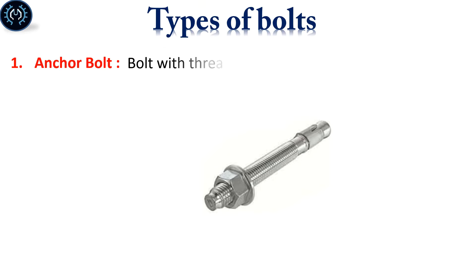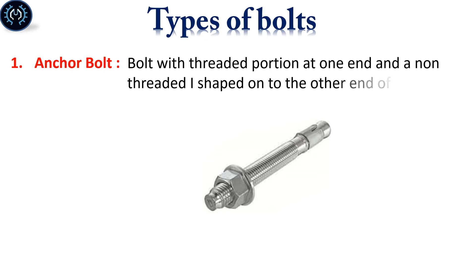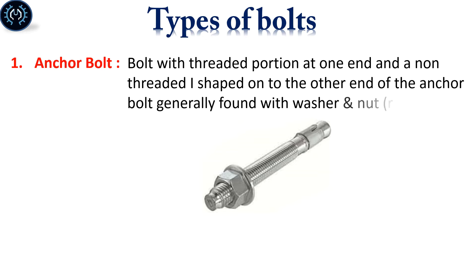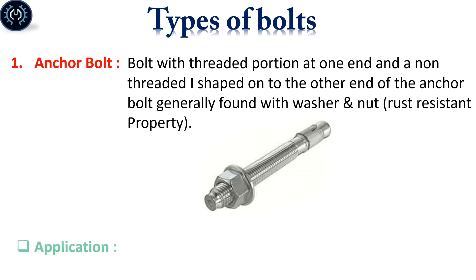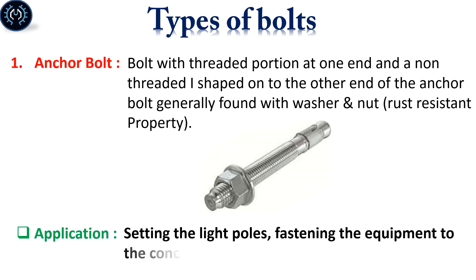Anchor bolt is a bolt with a threaded portion at one end and a non-threaded eye-shaped end on the other, generally found with washer and nut, and has rust-resistant properties. Anchor bolt is used for setting light poles and fastening equipment to a concrete base.